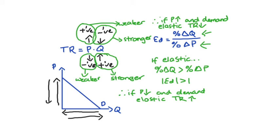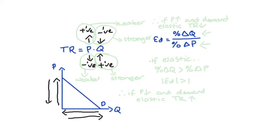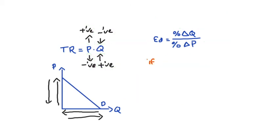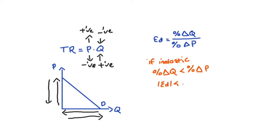Now let's think about what happens when demand is inelastic. Demand is inelastic if the percentage change in quantity is smaller than the percentage change in price — so price moves around and quantity demanded doesn't change so much. Our elasticity in absolute value here will be less than one, since the numerator in absolute value is less than the denominator.